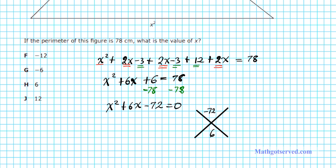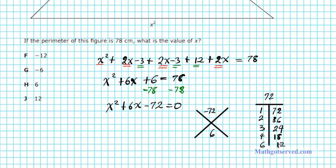What two numbers multiply to give negative 72 and add to give 6? Let's write down pairs that multiply to 72: 1×72 gives 38 or 34 — doesn't work; 3×24 gives 27 or 21 — doesn't work; 4×18 gives 22 or 14 — doesn't work. Then 6×12 — voilà, this pair works perfectly. Since the sum is positive and the product is negative, the smaller of the two must be negative, giving us negative 6 and positive 12.